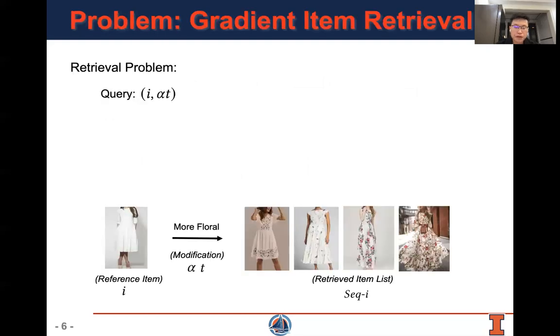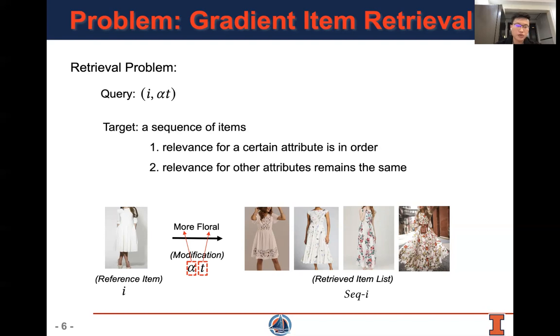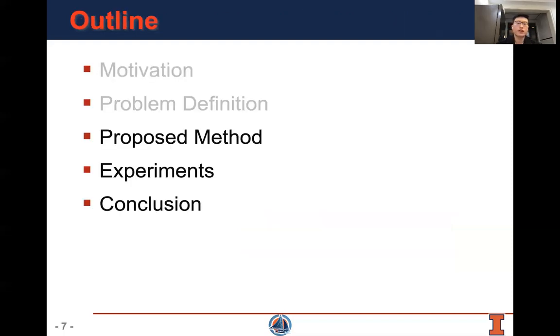We formally define the gradient item retrieval as a retrieval problem in which the reference item and the modification alpha t will be composed as query. In here, alpha denotes the modification directions such as less or more. t denotes the attribute such as floral. And the target is to retrieve a sequence of items in which the relevance for a certain attribute is in order and the relevance for other attributes remains the same.